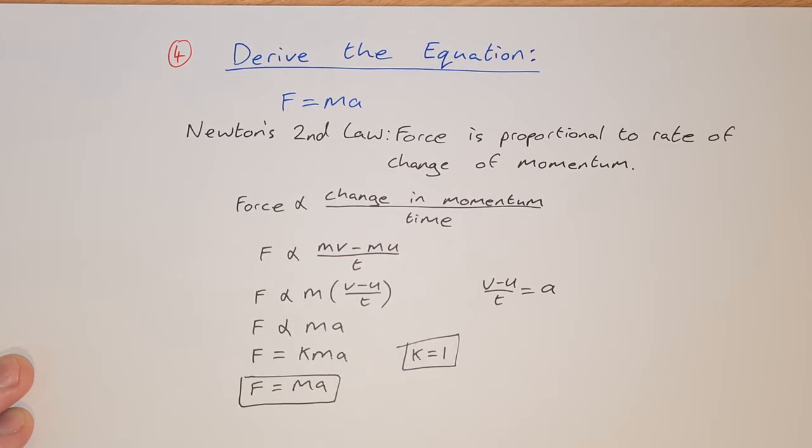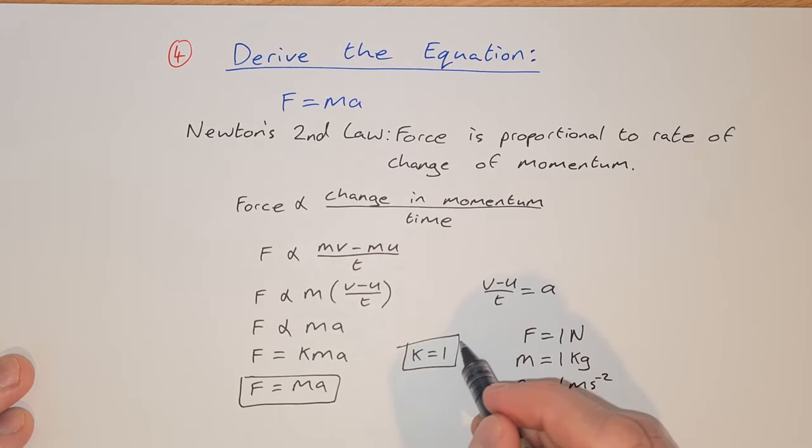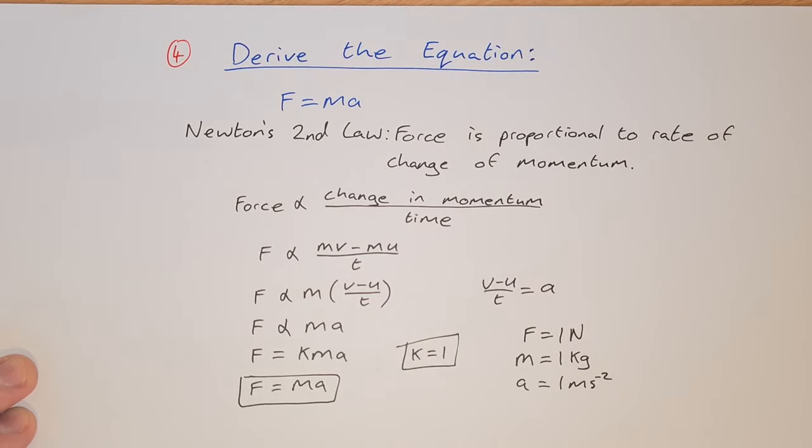Now why is k equal to 1? Well, the force is 1 newton if we define 1 newton, so f equals 1 newton. In this case, if we have a force of 1 newton, that means we have a mass of 1 kilogram and an acceleration of 1 meter per second squared. If we substitute 1, 1, and 1 into the equation, we get k equals 1. That's the reason why k equals 1.